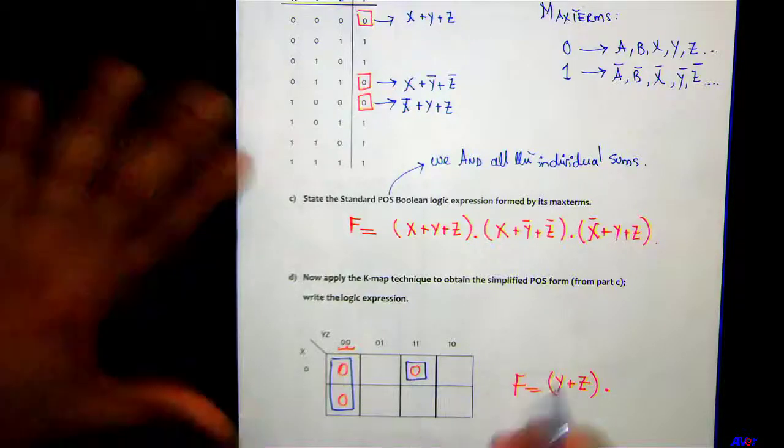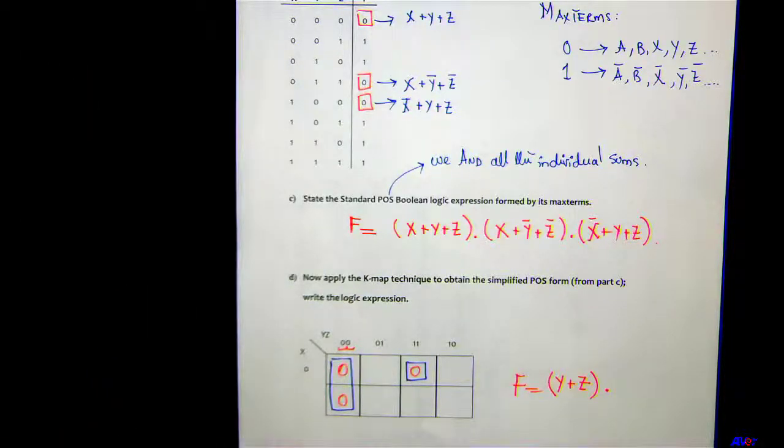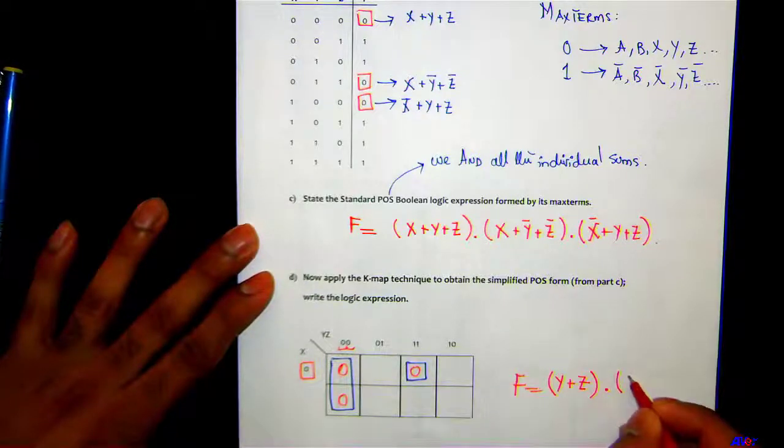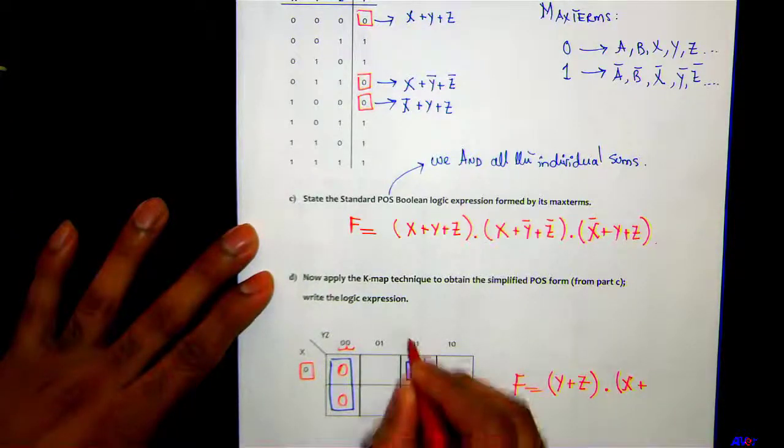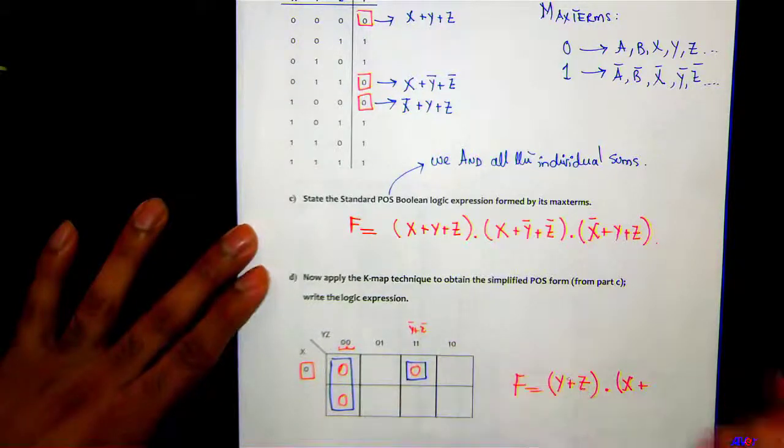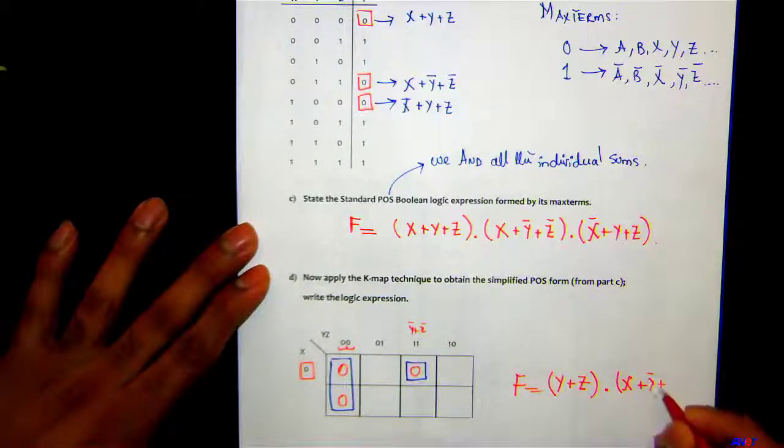Unfortunately we can't find a pair for this one, so it has to be lonely. So what would be the expression for this one right here? You got this zero here, so this is X plus this is Y̅ plus Z̅, right? So you got X+Y̅+Z̅.